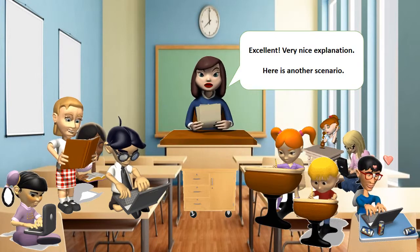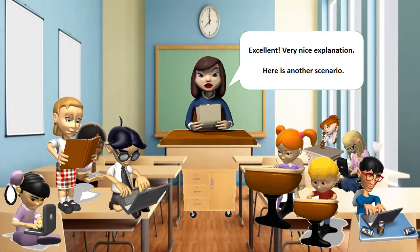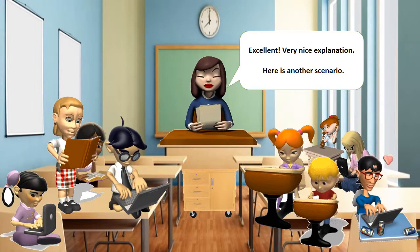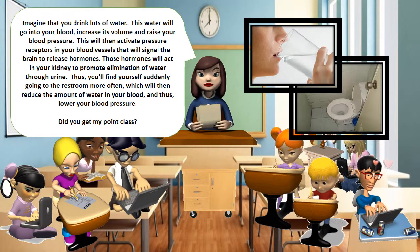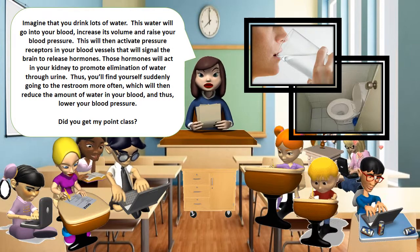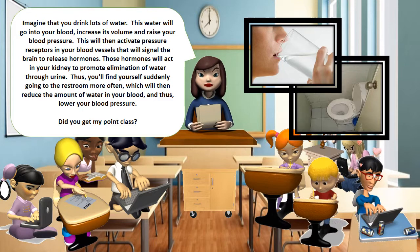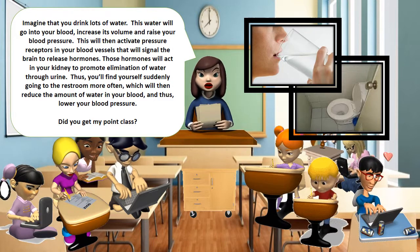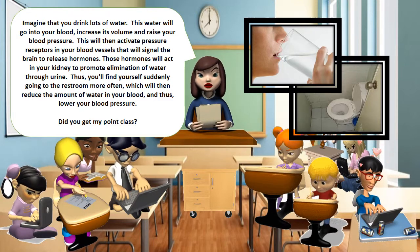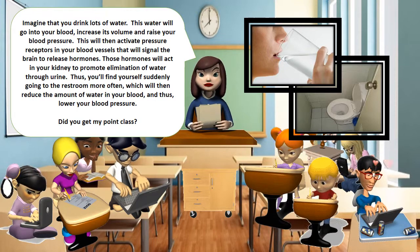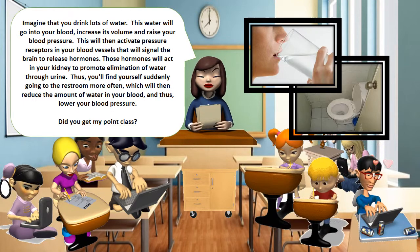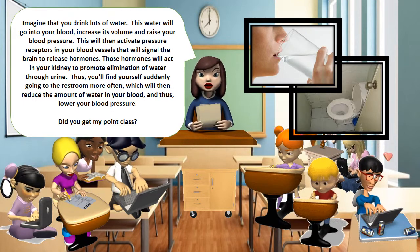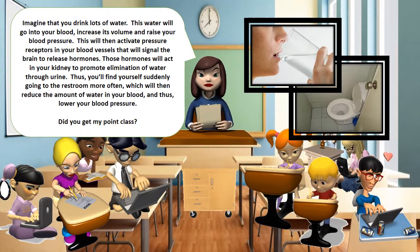Excellent! Very nice explanation. Here is another scenario — imagine that you drink lots of water. This water will go into your blood, increase its volume, and raise your blood pressure. This will then activate pressure receptors in your blood vessels that will signal the brain to release hormones. Those hormones will act in your kidney to promote elimination of water through urine. Thus, you'll find yourself suddenly going to the restroom more often, which will reduce the amount of water in your blood, and thus lower your blood pressure.